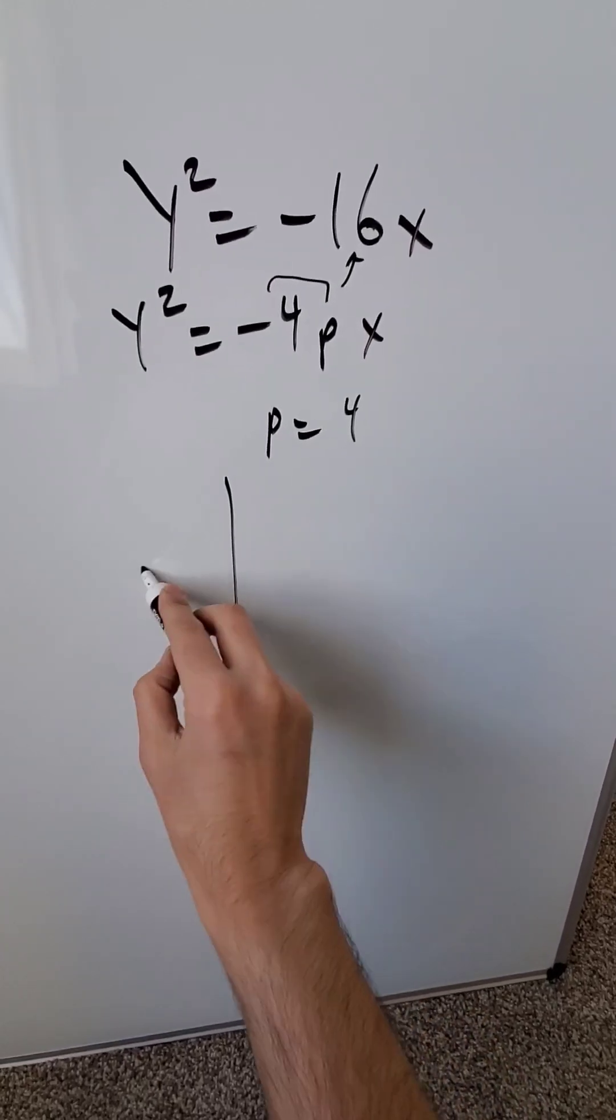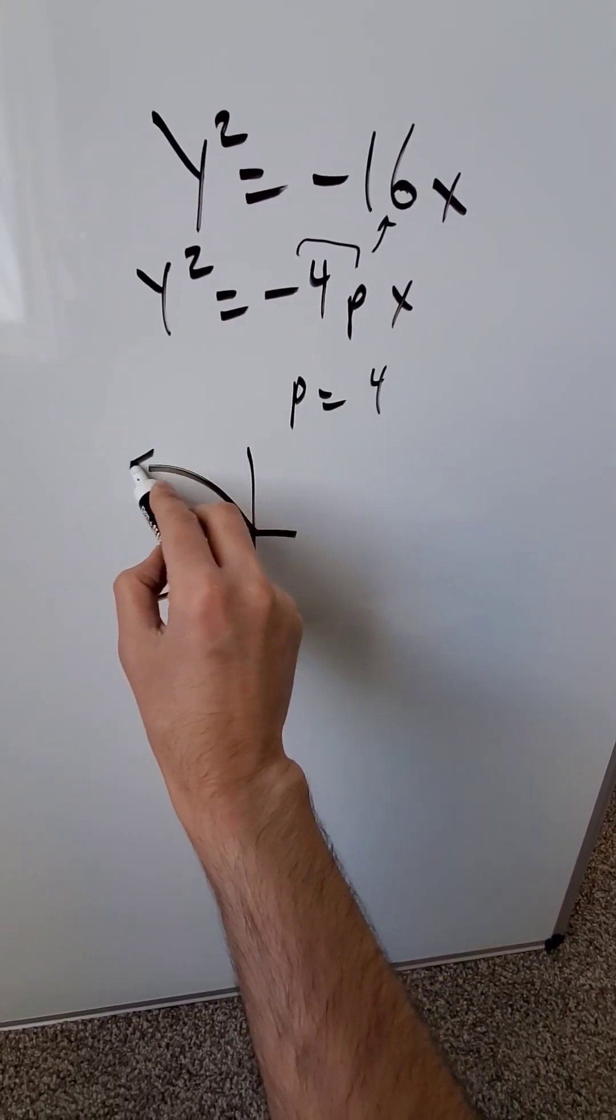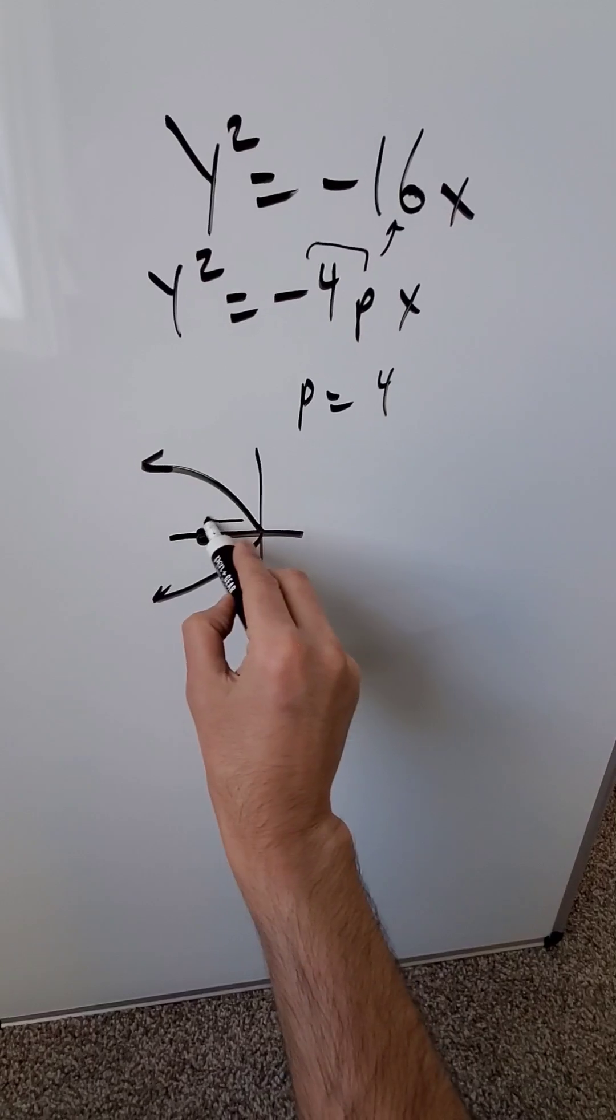And that tells you you are looking at a vertex here at the origin, a parabola facing towards the left. The focal point must be in this direction right here.